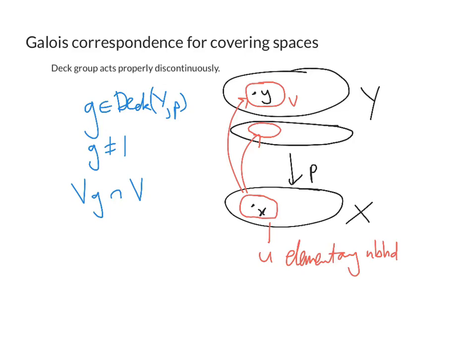Well first of all, because G is a covering transformation, this set VG has to be another one of these path components maybe this one living over U. I mean it could be the same one a priori, but it has to be a path component of P inverse U and if it's not the path component that contains Y then clearly it's disjoint from the set V because V is the path component containing Y and if those two intersected then they would form a path connected union. So either this is the empty set or VG equals V, these are the only possibilities.